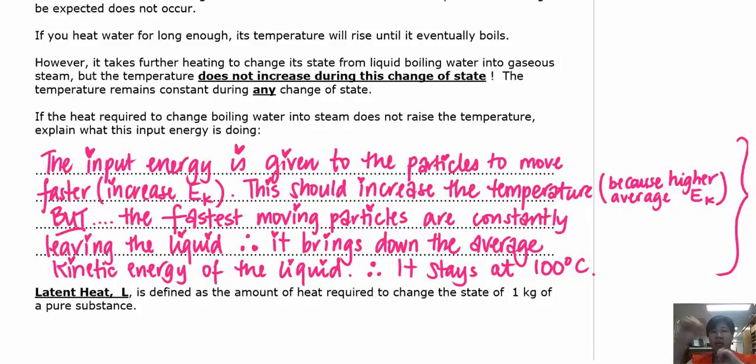It's turning into kinetic energy and it should increase the temperature because things are moving faster. So in terms of average kinetic energy, it should all increase. However, when you are boiling something or when something turns from liquid to a gas, the fastest moving particles are actually constantly leaving the liquid. And so if you are removing the fastest moving molecules all the time, then it actually brings the average back down. And so that's why it stays at 100 degrees because the average kinetic energy of the liquid actually hasn't changed.